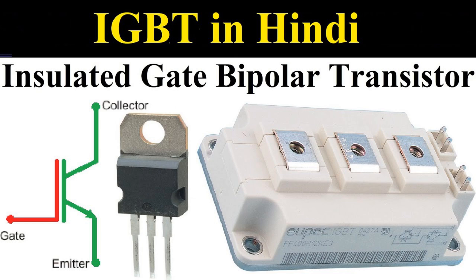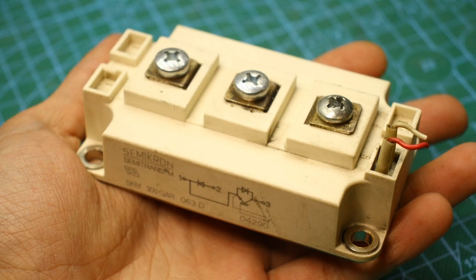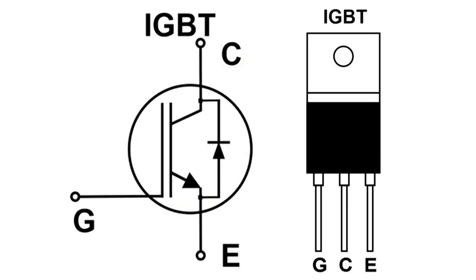Railway systems — in high-speed trains and subway systems, IGBTs are used in traction inverters and braking systems to efficiently control and manage the power delivered to and from the train's motors, improving energy efficiency and reliability. Home appliances — IGBTs are increasingly being used in high-efficiency home appliances like air conditioners, refrigerators, and washing machines. They help control motors and compressors, reducing power consumption and improving overall energy efficiency. Lighting systems — IGBTs are used in high-efficiency lighting systems, including dimmable fluorescent lights and high-intensity discharge (HID) lamps, helping to control the power supplied to the lights for more efficient lighting control.